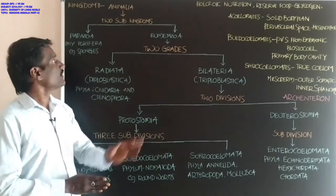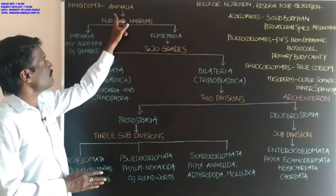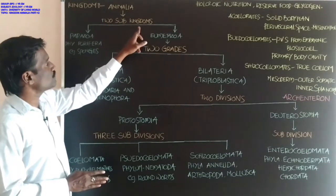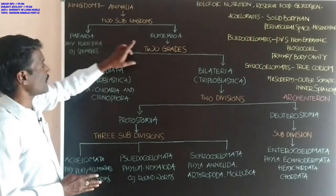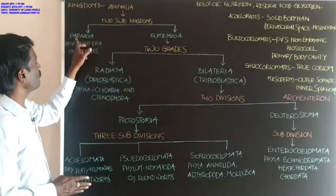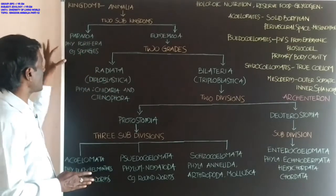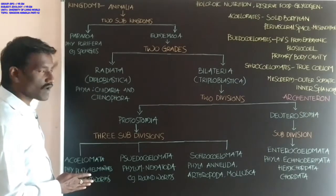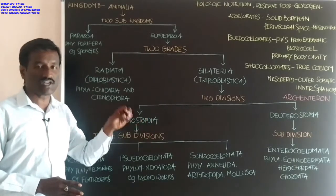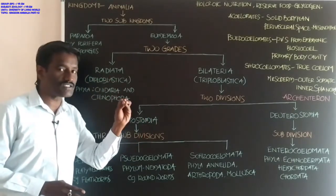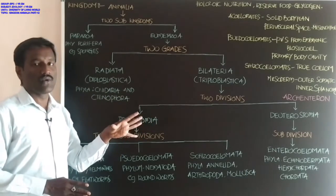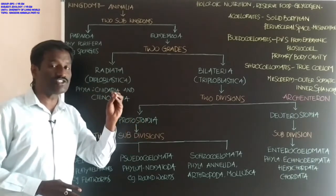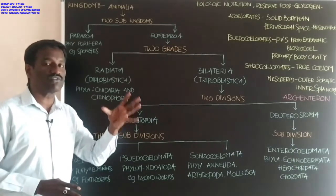What about the classification of Kingdom Animalia? It is divided into two sub-kingdoms: one is Parazoa and another one is Eumetazoa. Parazoa includes a group of animals that do not show tissues or organs. Organ systems are not developed in these organisms. Body organization ends with cells only; the entire body is formed with cells.